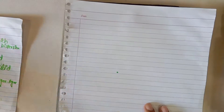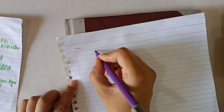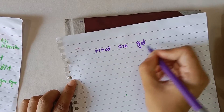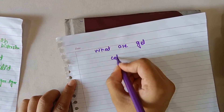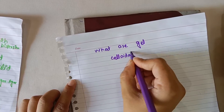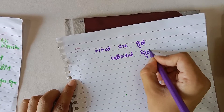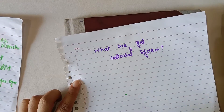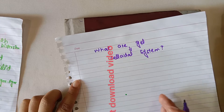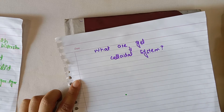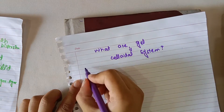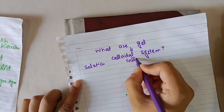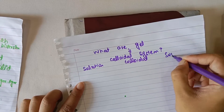The first question that should arise in our mind while we are discussing gel is: what are gels? Basically, gels are types of colloidal systems. The next question is: what are colloidal systems? Depending upon the size of particles, we can classify systems into three main types: solution, colloids, and suspension.